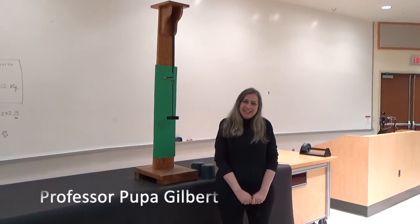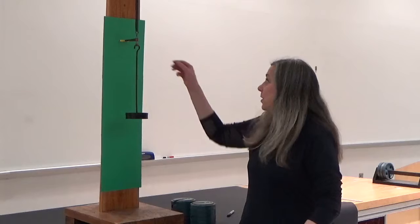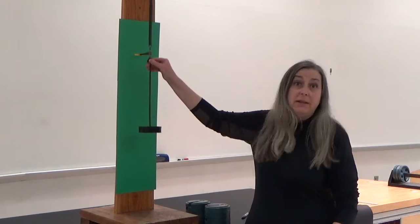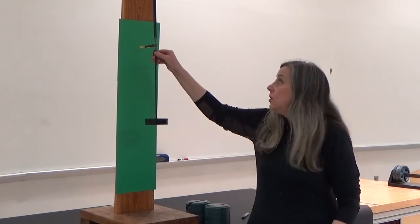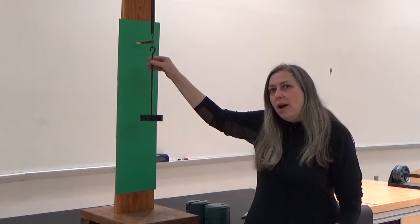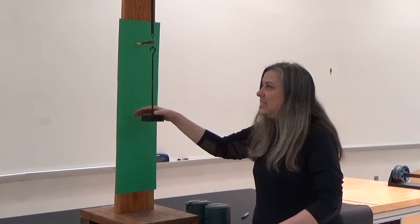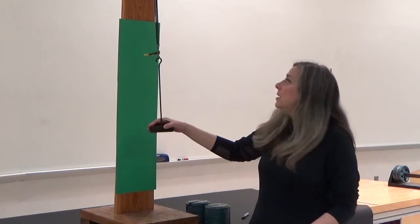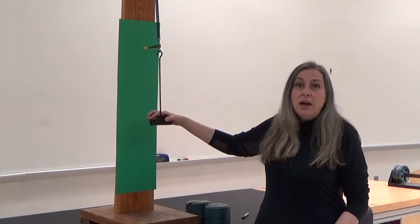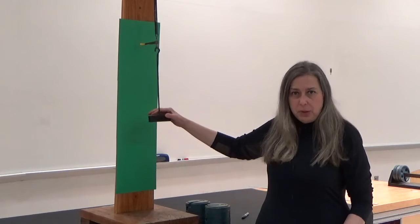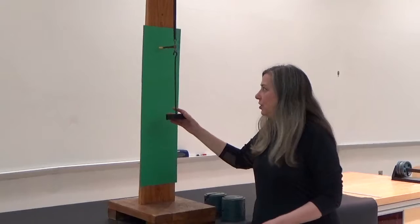Hooke's law is the law of elasticity, the law that describes how an elastic thing, for example a stretchy spring that I have right here, wants to restore the position. If I stretch this spring, it wants to restore its rest position, its equilibrium position.